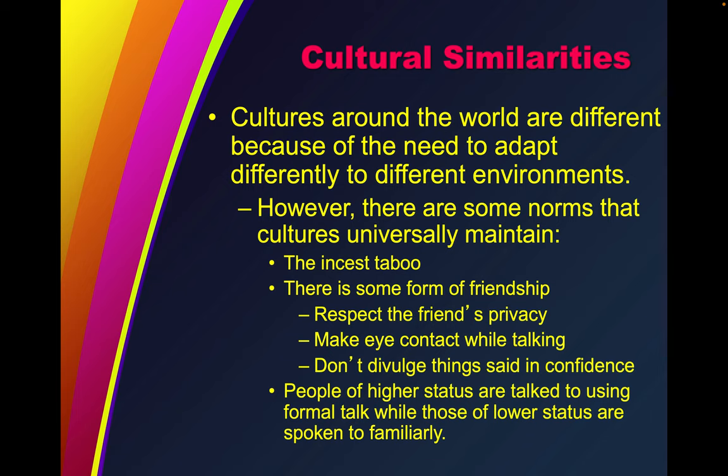The incest taboo is fairly universal. There is some form of friendship, respect of the friend's privacy, making eye contact while talking, and not divulging things said in confidence. People of higher status are talked to using formal talk, while those of lower status are spoken to familiarly. Language is a strong social identifier.